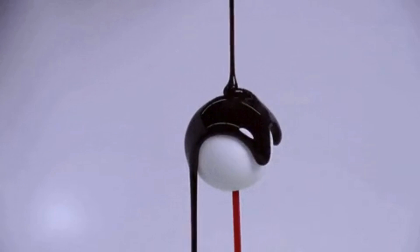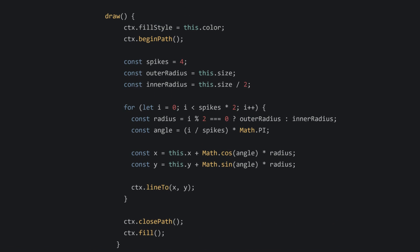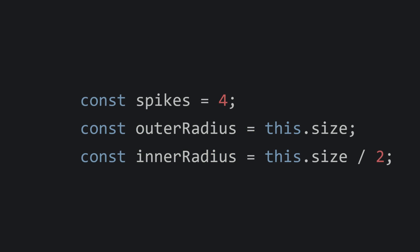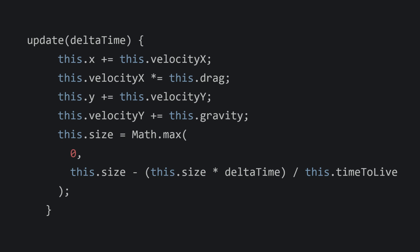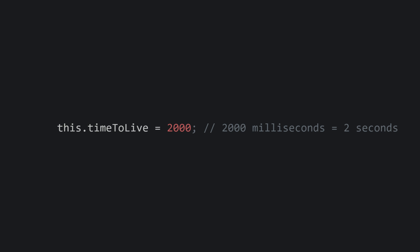Now let's talk about physics. Each confetto has its own velocity, gravity, and drag, making our confetti behave like it would in the real world. Gravity pulls it down while drag slows it down, simulating air resistance. The draw method is where the actual visual magic happens — we draw each confetto as a shape with spikes, kind of like a little star. By altering the number of spikes and the inner and outer radius, you can create various shapes. The update method animates our confetto over time: we adjust the position based on velocity, apply gravity, and reduce the size over time. The timeToLeave property ensures that each confetto gradually fades away, preventing our screen from getting overcrowded.